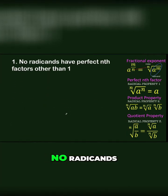Let's begin discussing the first one. No radicands have perfect n-factors other than 1. For example,